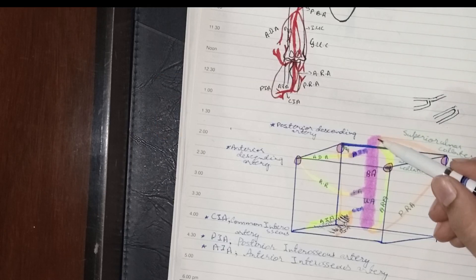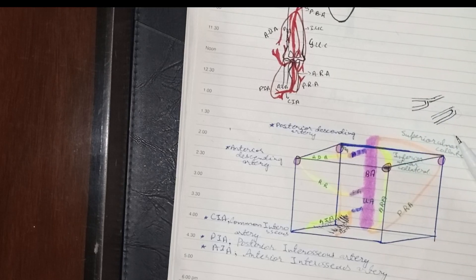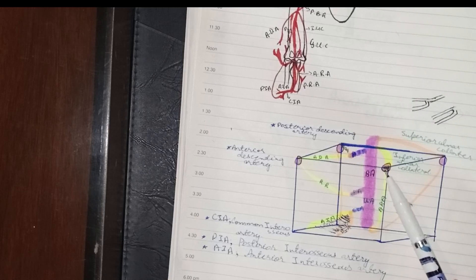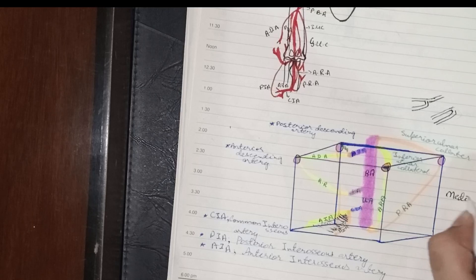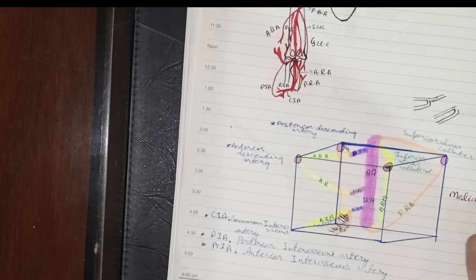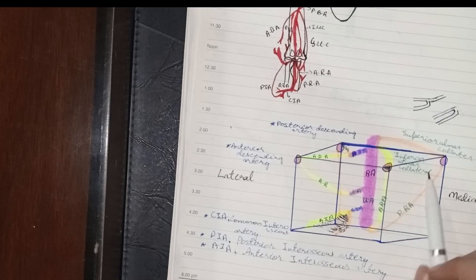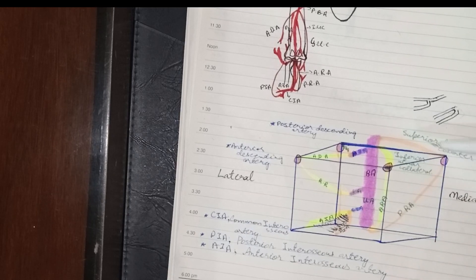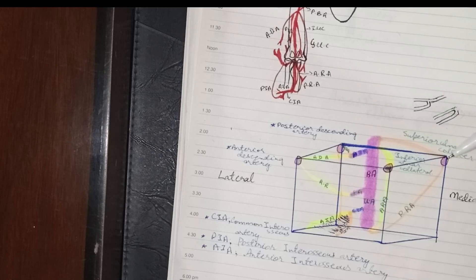The brachial artery is divided into two collateral branches: a superior ulnar collateral and an inferior ulnar collateral. These are on the medial aspect. The superior ulnar collateral and inferior ulnar collateral travel along the medial side of the arm toward the elbow.